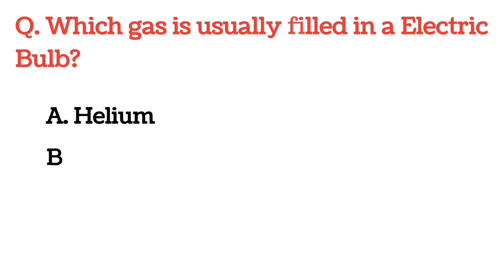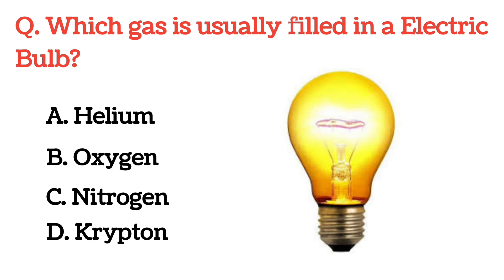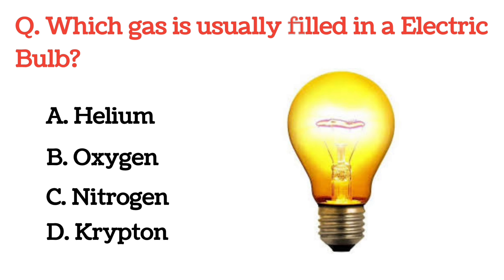Which gas is usually filled in an electric bulb? The correct answer is Option C: Nitrogen.